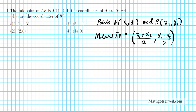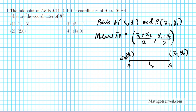Let me give you a visual. Say you have a segment AB, where A has coordinates (x1, y1) and B has coordinates (x2, y2). The midpoint right here can be determined using the formula: x1 plus x2 over 2, and y1 plus y2 over 2. The midpoint is the central point of the segment, with the two given points as endpoints.